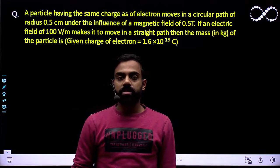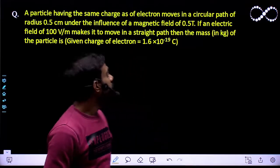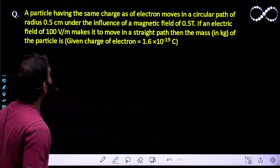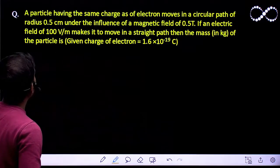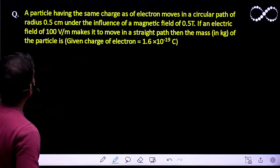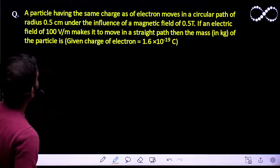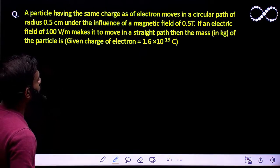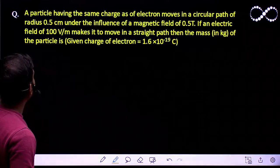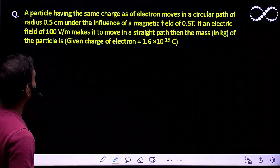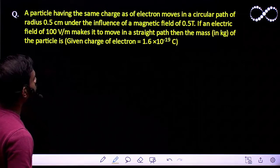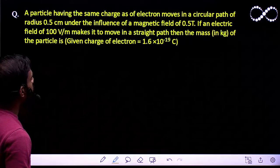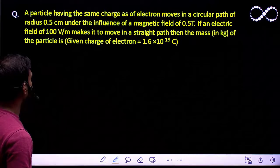Hello students, let us see this question here. A particle having the same charge as that of the electron moves in a circular path of radius 0.5 cm under the influence of a magnetic field of 0.5 tesla.